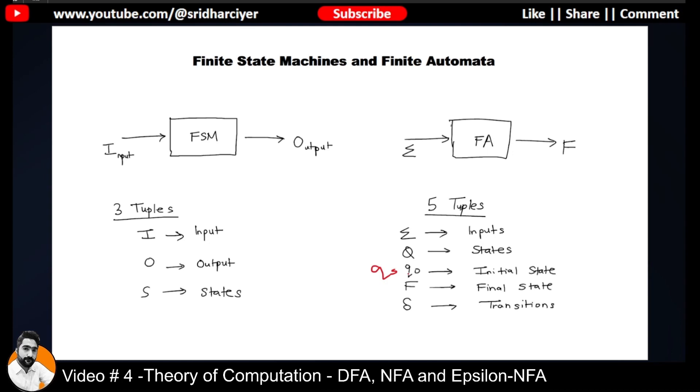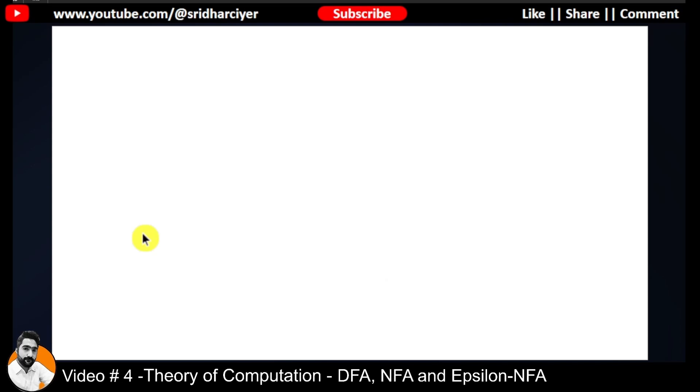So what is the basic difference? If you revise what we did in the last lecture, we saw a classification. If you remember, I had told you that FA consists of these many classifications: without output and with output. So without output further consists of three machines, whereas with output consists of two machines. Without output consists of DFA, NFA, and Epsilon NFA.